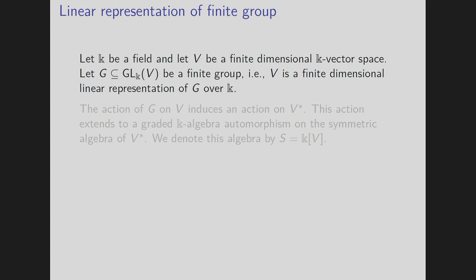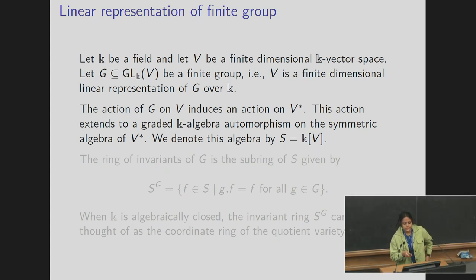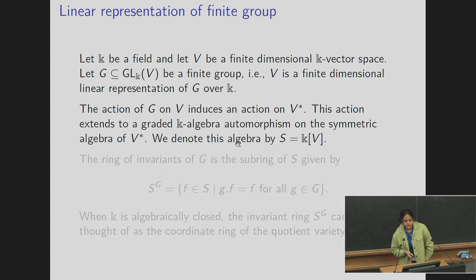Let K be a field, V a finite dimensional K-vector space, and G a finite group which is a subgroup of GL(V). So V is a finite dimensional faithful linear representation of G over K. This action of G induces an action on V-dual, and for each element g in G it generates a graded K-algebra automorphism on the symmetric algebra of V-dual. We denote this symmetric algebra by S, which is a polynomial ring in N variables where N is the dimension of V.